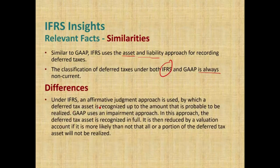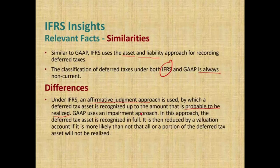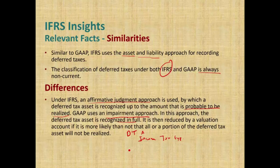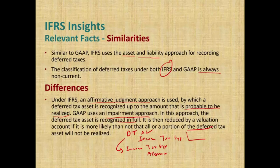A key difference: under IFRS, an affirmative judgment approach is used, by which a deferred tax asset is recognized only up to the amount that is probable to be realized — they estimate how much will be recognized. GAAP uses an impairment approach: the deferred tax asset is recognized in full, then reduced by a valuation allowance. Under GAAP, we debit the deferred tax asset and credit income tax expense, then debit income tax expense and credit the allowance. So under GAAP we make two entries, while IFRS makes one entry estimating the realizable amount.